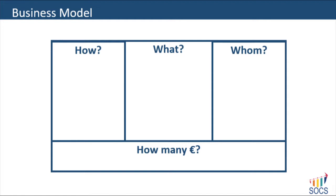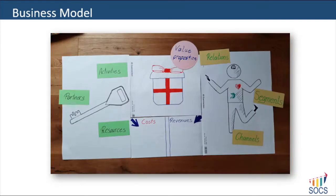What is a business model? First, for whom? A business model identifies the customer. Second, what? The service or product that creates value. Third, how you create your product or your service. And it's about the money — about revenues and costs.